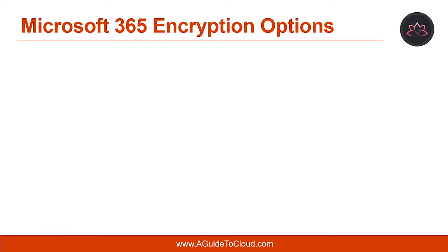By using encryption, you help ensure that only authorized parties can use the encrypted data. Microsoft 365 offers a variety of different encryption services and features with a basic differentiation between data at rest and data in transit.